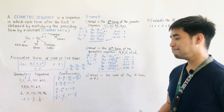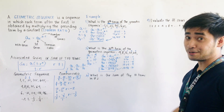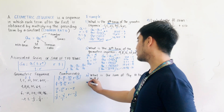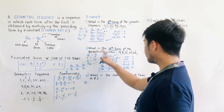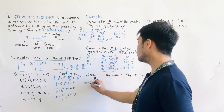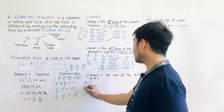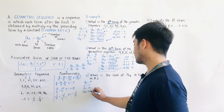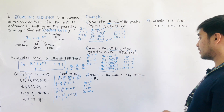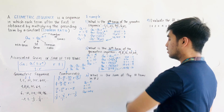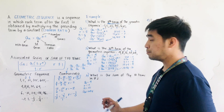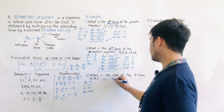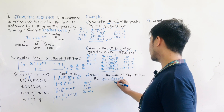For example 3: What is the sum of the 10 terms from example 2? We use the same given: A1 equals 4, R equals 2, N equals 10, and A10 equals 2,048. Since R is not equal to 1, we use the formula: SN is equal to A1 times 1 minus R raised to N over 1 minus R.